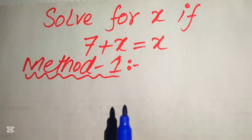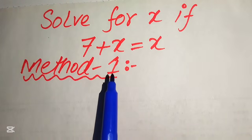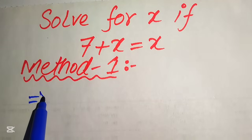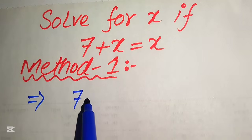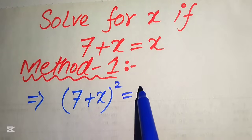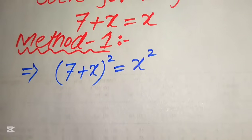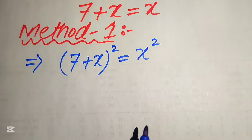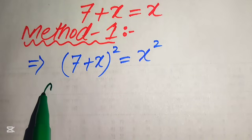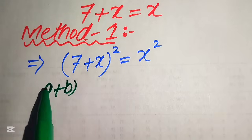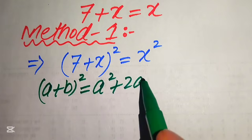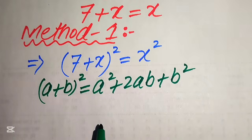In the first method, we find the value of x by taking the square of both sides. So when we square both sides, it is written as (7 + x)² = x². Now we use the algebraic formula: (a + b)² = a² + 2ab + b².